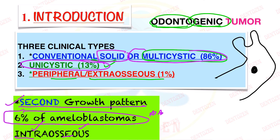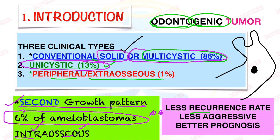But why are they considered different? Because they are different from the solid type: they have a lesser recurrence rate, they don't recur as frequently as the solid type, they are less aggressive, and they have better prognosis — better treatment outcome as compared to the solid type. Because of these reasons and different clinical, radiographic, and histopathological findings, they are considered a separate entity — Unicystic Ameloblastoma.